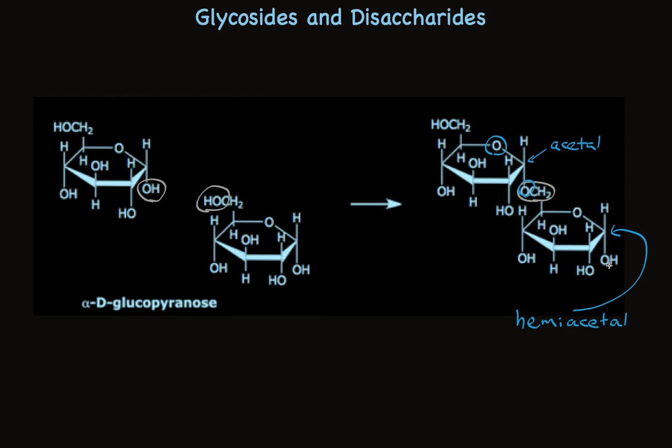This anomeric center has one alkoxy group, the ring, and a hydroxyl group. This could be replaced by the hydroxyl group of another sugar. And we would go from having two sugars attached to three. Well, in this particular example, we have just two sugars attached to each other. So it's called a disaccharide. If we had three sugars attached, it would be a trisaccharide, and so on and so forth.